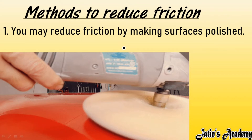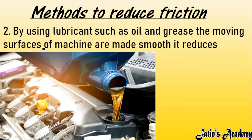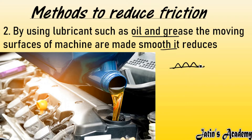The second method is by using lubricants such as oil and grease. The moving surfaces of machines are made smooth using lubricants. We give oil and grease to machinery parts so that the surface becomes smooth. Smooth means less irregularities, which means less interlocking between the surface and object, and therefore less friction.